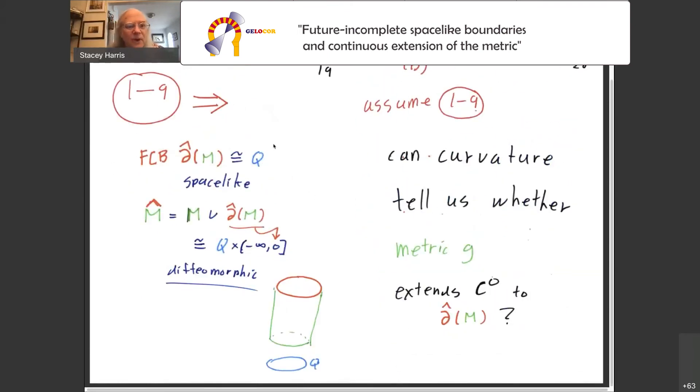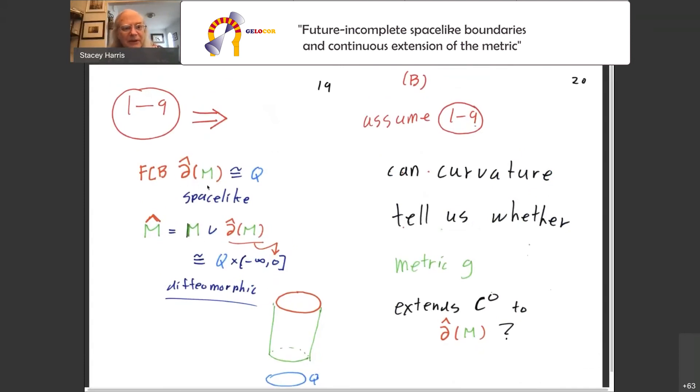With those assumptions, one through nine, then we know that the future causal boundary is spacelike, it is diffeomorphic to Q, and that it is attached to M in such a way that M hat, again in the proper topology, is diffeomorphic to Q cross minus infinity to zero, including the zero, and the boundary occurs at the zero. That's the end of the long portion, Part A, what it takes to get a nice well-behaved spacelike boundary in the future incomplete foliation case.